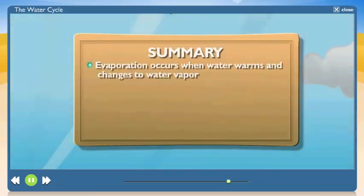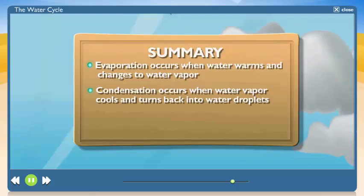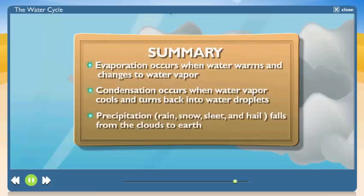When water on Earth is warmed, it evaporates and becomes water vapor, an invisible gas. As the water vapor rises into the air, it cools and turns into water droplets again. That's called condensation. Then the water droplets form clouds, rain falls from the clouds, and the cycle starts all over again.